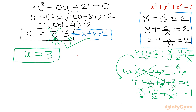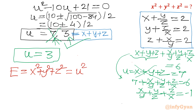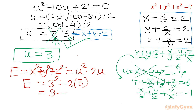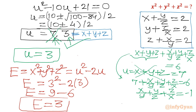Now with u = 3 accepted, our required expression is e = x² + y² + z² = u² − 2u = 3² − 2(3) = 9 − 6 = 3. So the answer is 3. I hope you liked this video friends.